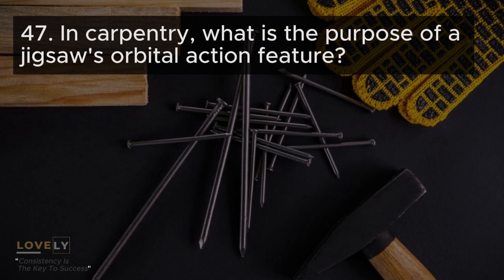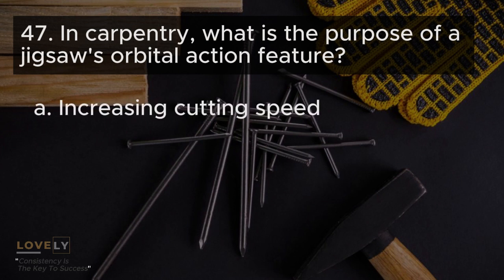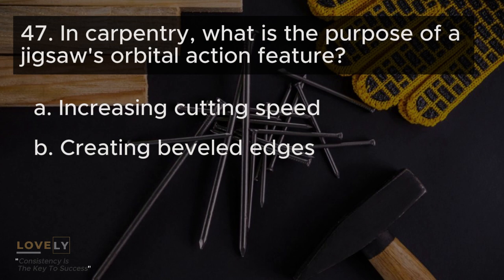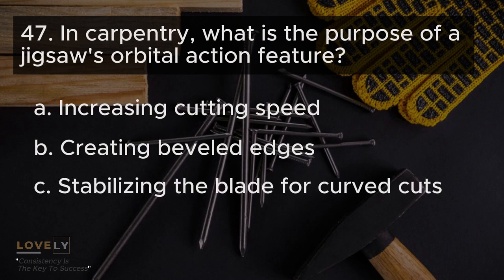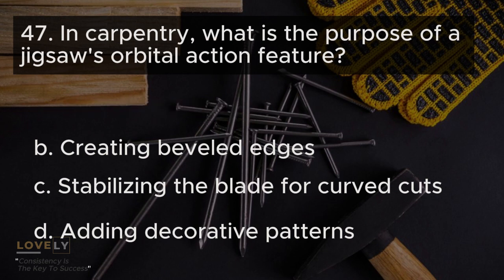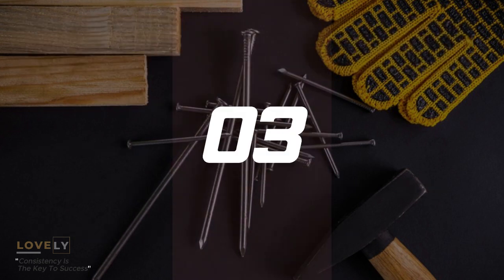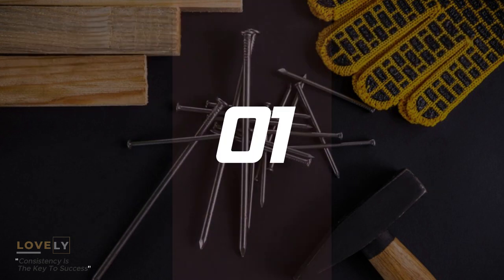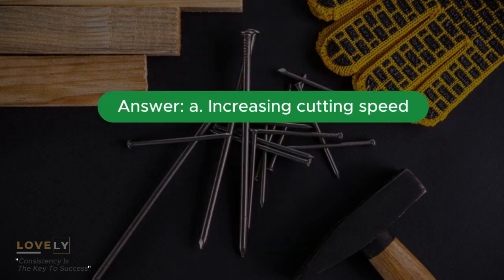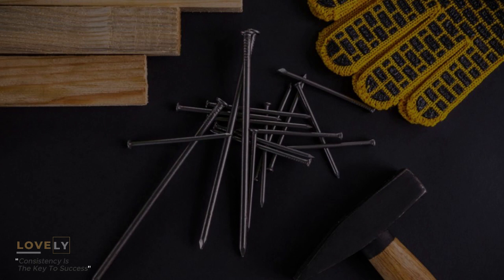Question 47: In carpentry, what is the purpose of a jigsaw's orbital action feature? A. Increasing cutting speed B. Creating beveled edges C. Stabilizing the blade for curved cuts D. Adding decorative patterns. Answer A. Increasing cutting speed.